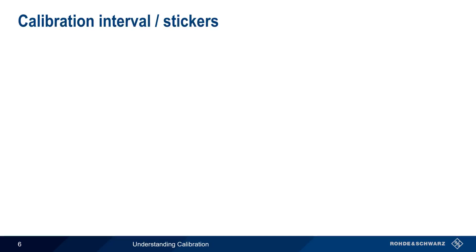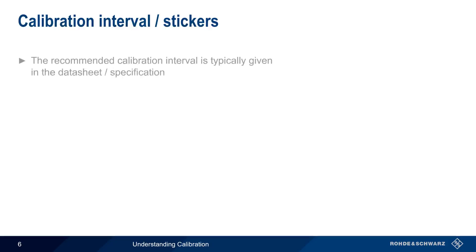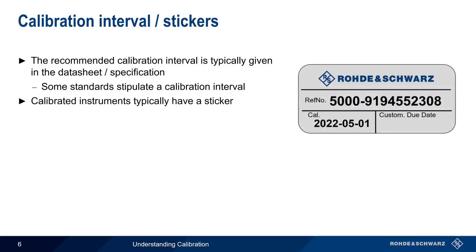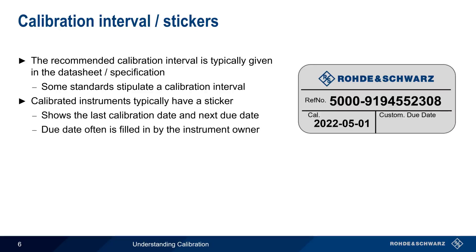Instrument calibration is done on a regular or periodic basis, and the recommended calibration interval is typically given in the instrument data sheet or specification, although in some cases various technical standards may stipulate a certain calibration interval. Stickers are often placed on instruments during calibration, showing both the last calibration date as well as the next date when calibration is due, although the calibration due date is usually filled in by the instrument owner, not the calibration lab.